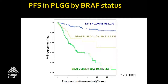NF1 patients with low-grade glioma generally have indolent disease — 10-year progression-free survival was 83% in our cohort. If you had a BRAF fusion, 10-year progression-free survival was about 50%. And if you had the V600E mutation, 10-year progression-free survival was only about 20%.